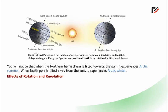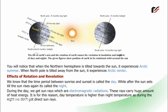Effects of rotation and revolution: the time period between sunrise and sunset is called the day, while after the sun sets till the sun rises again it is called the night. During the day we get sun rays which are electromagnetic radiations and carry a huge amount of heat energy. This is why day temperature is higher than night temperature, as during the night we don't get direct sun rays.